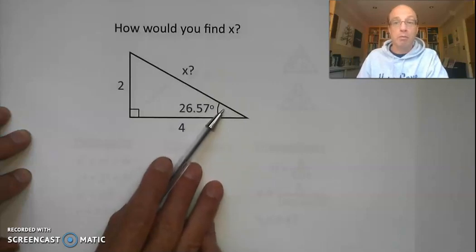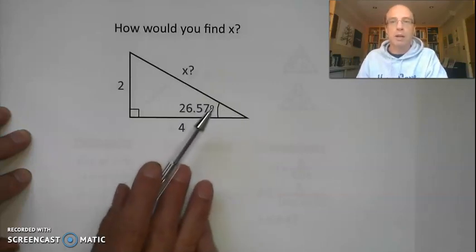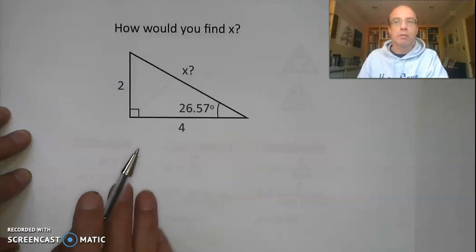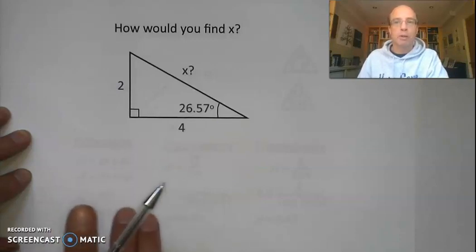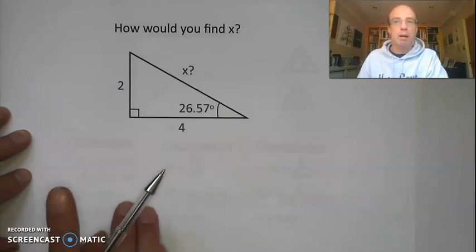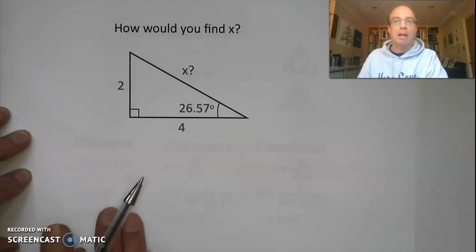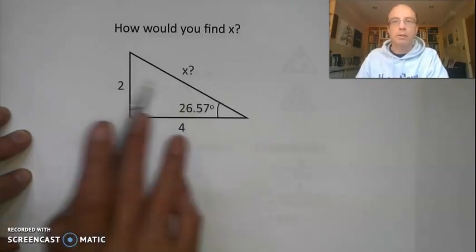What I'd like you to do is pause the video. I would like you to work out whether you're going to use either Pythagoras or trigonometry to find that value of x, the length of the hypotenuse. Once you've done that, work through the maths, see if you can find the length, then restart the video. Pause the video now — work out Pythagoras or trigonometry and work out an answer for the value of x.